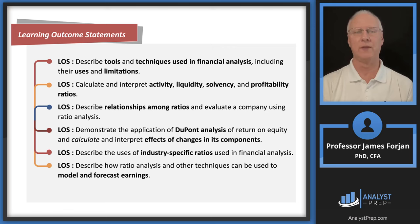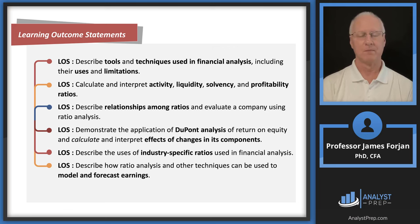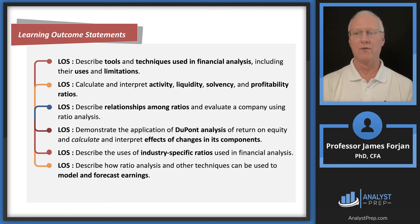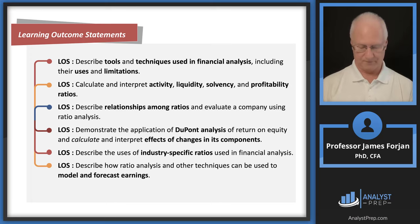Whenever you're asked on the exam to consider a particular ratio, make sure you can calculate it, compare it against peer firms, and perform trend analysis. Also important is the DuPont analysis, developed about 50 years ago by DuPont Corporation. It breaks down one of the profitability ratios into either three or five components. If you look at the 15 to 17 problems at the end of this learning module, most of them come from those two LOS items.